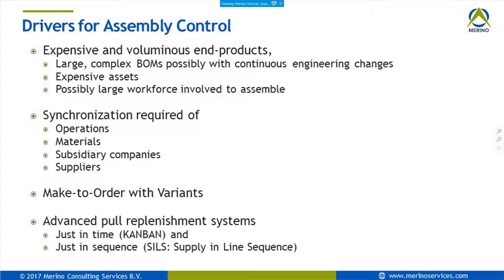What are the drivers for assembly control — what drives companies to move to this methodology? When we produce cars, planes, or trains, they are very large, and the most optimal way to produce them is to move them on a line from one station to another so value can be added at every station. It's very important to synchronize operations and materials.